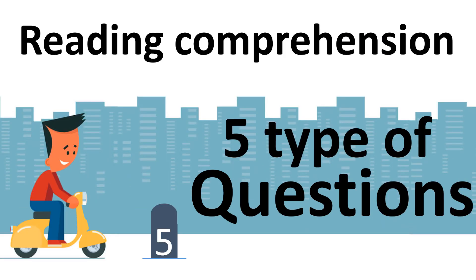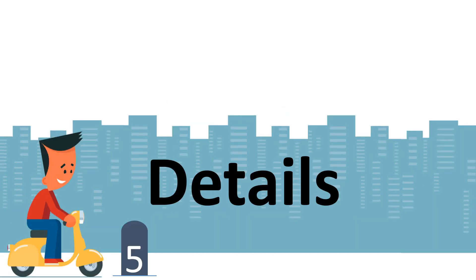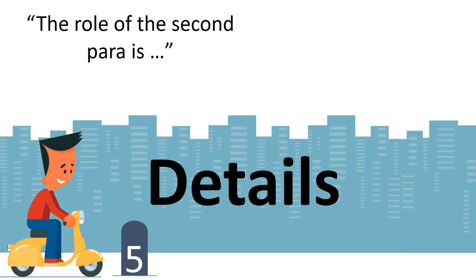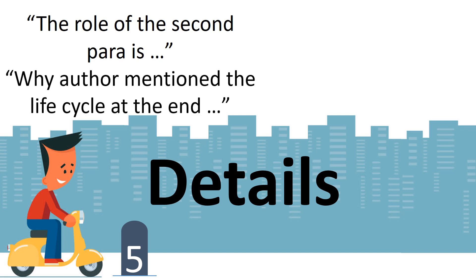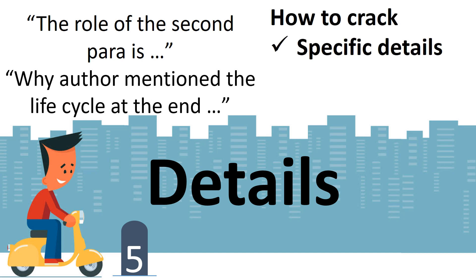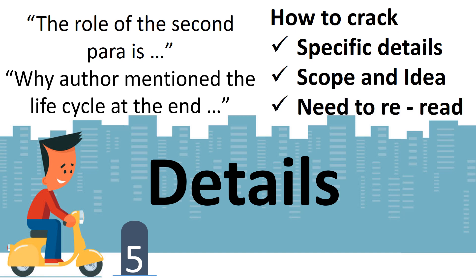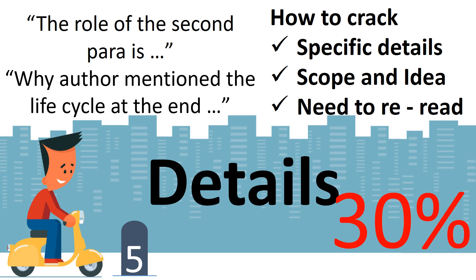At number five we have the most common type of question, which is talking about the details of a particular topic. For example, the question might look like: 'What is the role of the second paragraph?' or 'Why did the author mention the life cycle at the end of the paragraph?' To crack it, we need the specific details about that part of the paragraph — the scope and idea should be clear. You should understand what the paragraph is talking about and re-read the statements to understand the details.